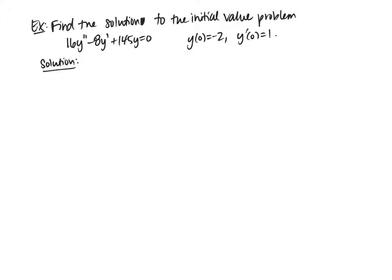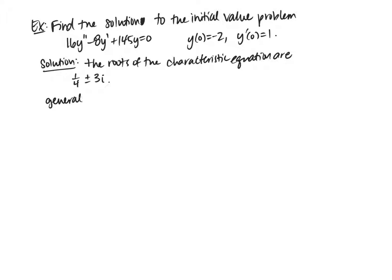We can figure out pretty quickly that the roots of this characteristic equation are one-fourth plus or minus 3i. You can find these using the quadratic formula. So by the previous theorem, the general solution is y equals c1 e to the t over 4 cosine of 3t plus c2 e to the t over 4 sine of 3t.